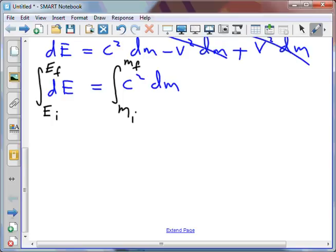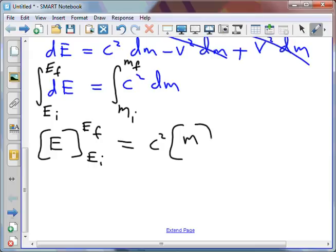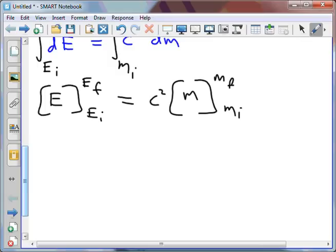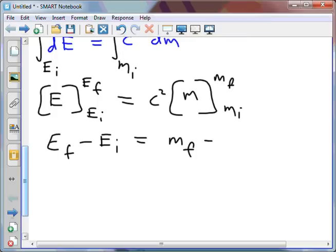And I'll end up with E final minus E initial. Integrating there with respect to m, keeping in mind that c squared is a constant, m final minus m initial. But that'll give me E final minus E initial is equal to m final minus m initial times c squared.